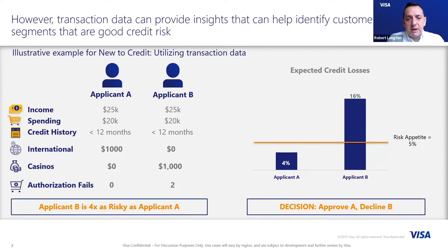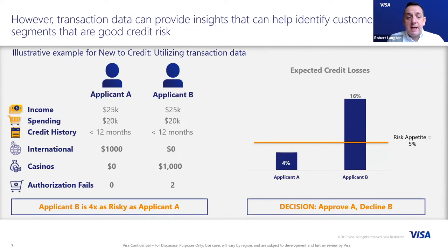Whereas applicant B presents more credit risk: no international travel, some spend at a casino, and two authorization fails — which indicates poor account management at a personal level.